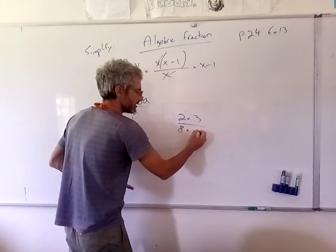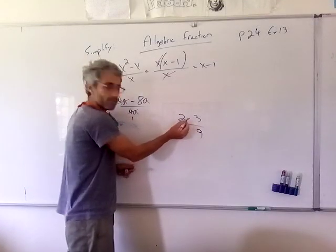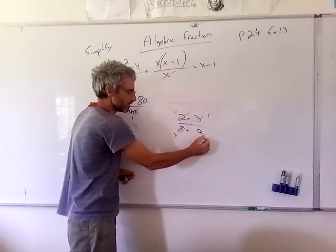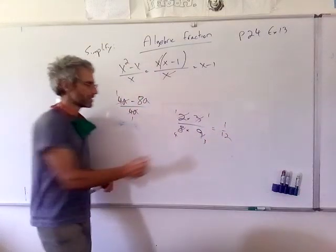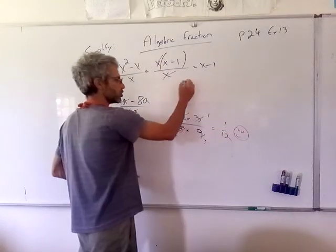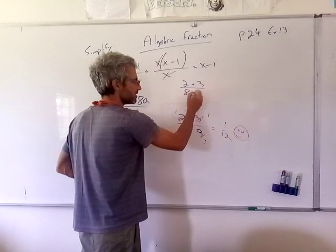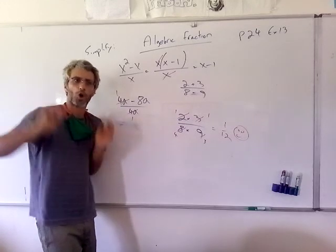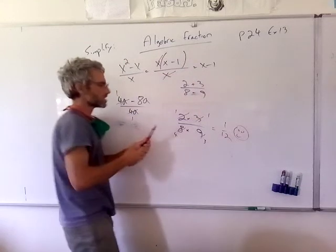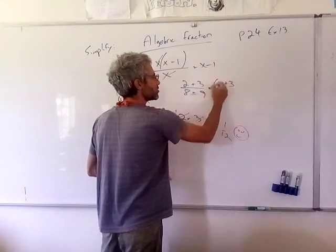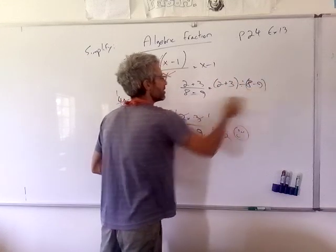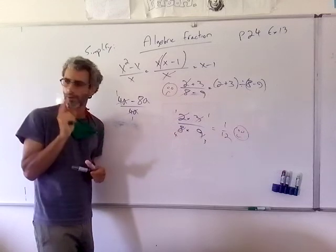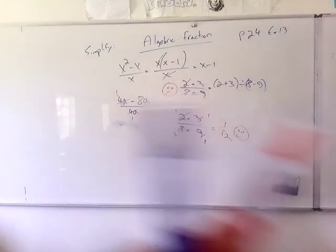For example: two times three divided by eight times nine — I can cross-cancel two and eight to get one and three, so that's one over twelve. That's correct. But if I change it to two plus three divided by eight minus nine, I cannot cross-cancel. This is one of the most common mistakes all the way into grade 12. The plus or minus tells you to add or subtract first before dividing — you can't start cross-cancelling.